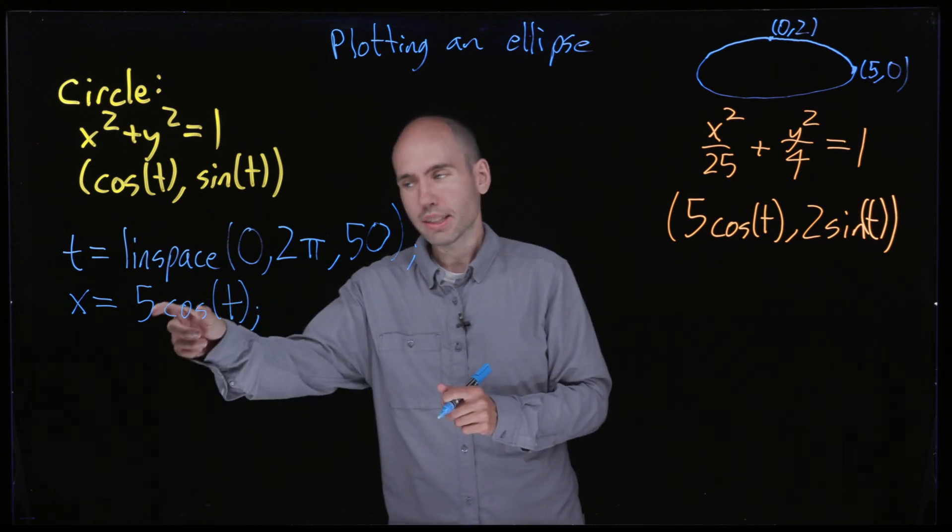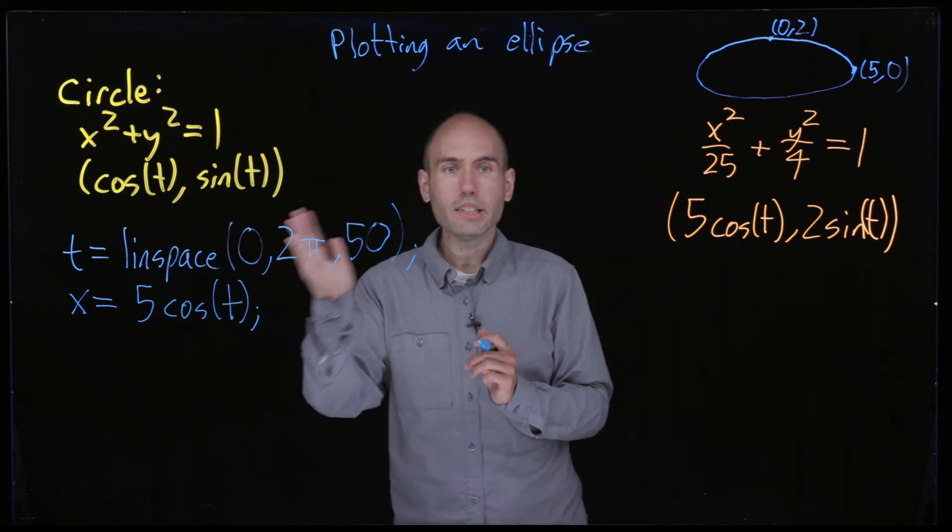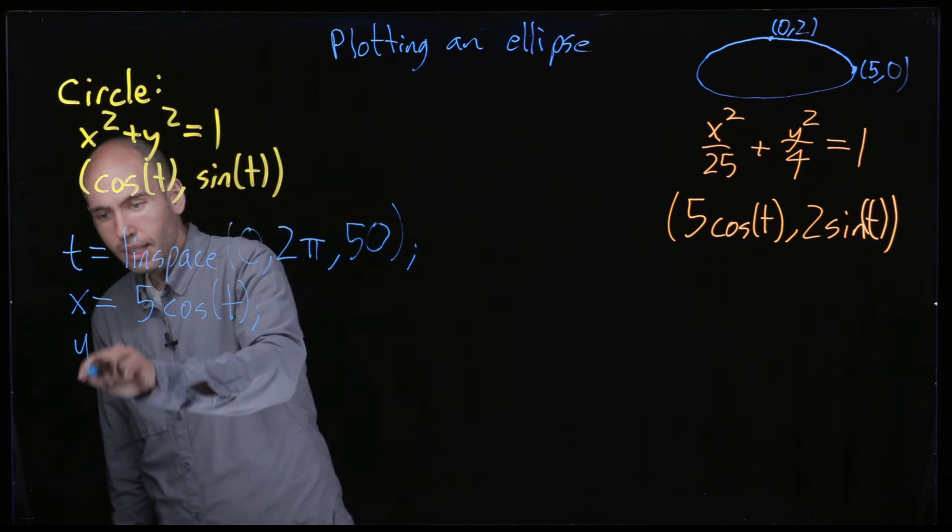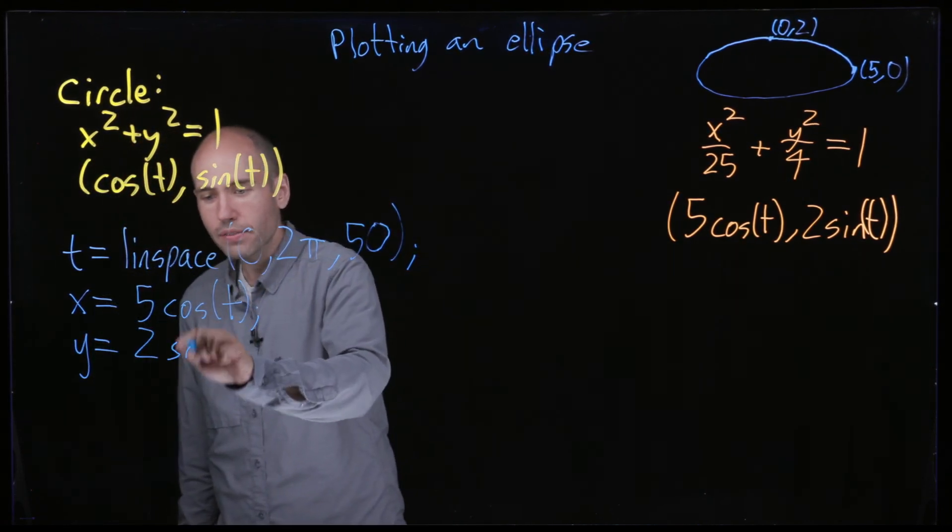But for MATLAB the answer is yes that does make sense. And what does it do? It just applies cosine to each of the individual entries in the vector. And so similarly y is going to be 2 sine of t.